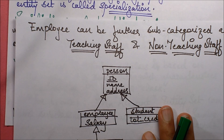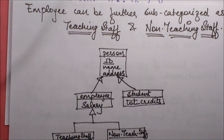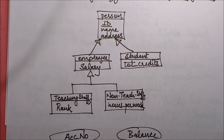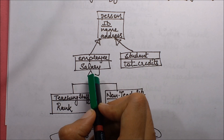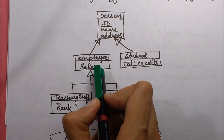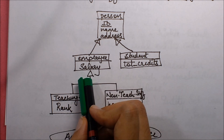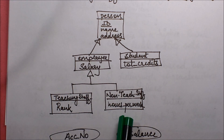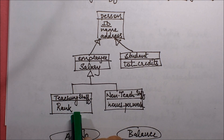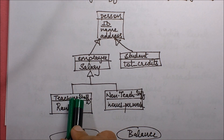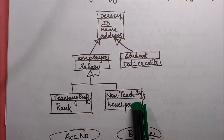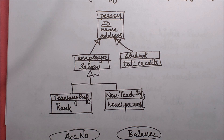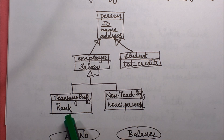Similarly, we can classify an employee further as teaching staff or non-teaching staff. In the diagram, 'person' is the high-level entity set, subgrouped into 'employee' and 'student'. Employee is itself a higher-level entity set with respect to 'teaching staff' and 'non-teaching staff'. Teaching staff has a rank — such as assistant professor, associate professor, or professor — while non-teaching staff is identified by salary based on hours per week worked.